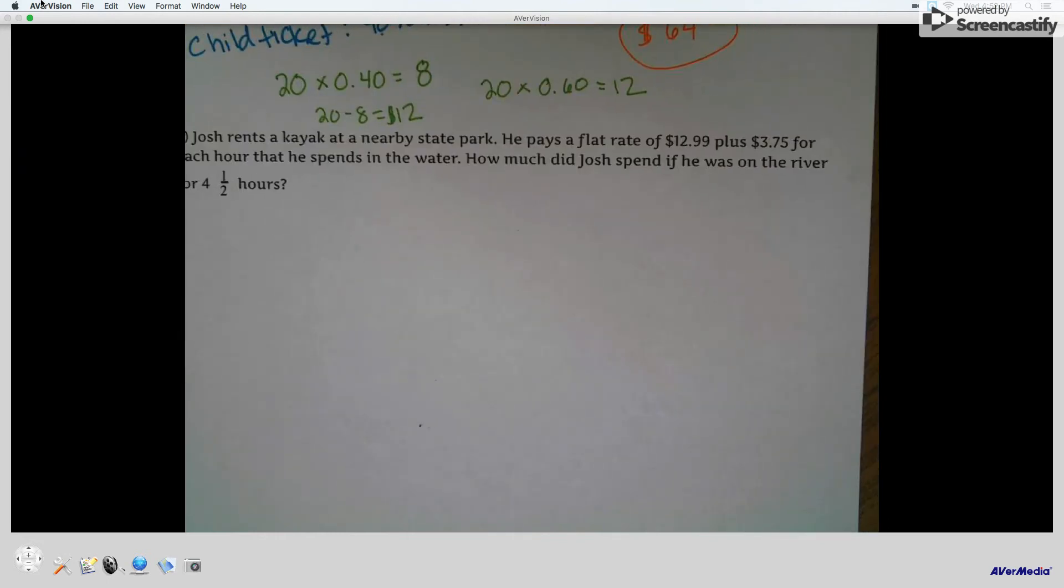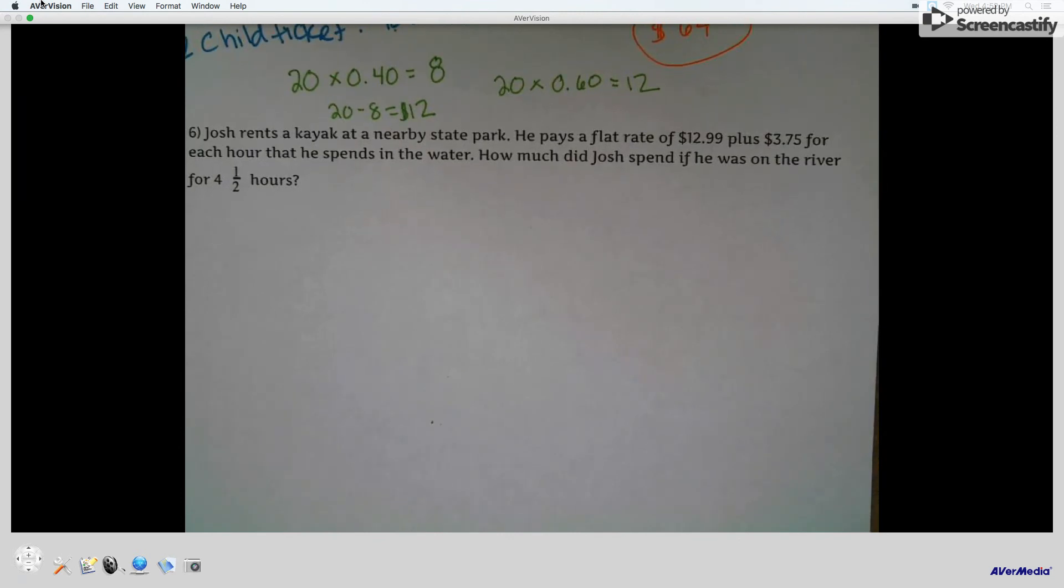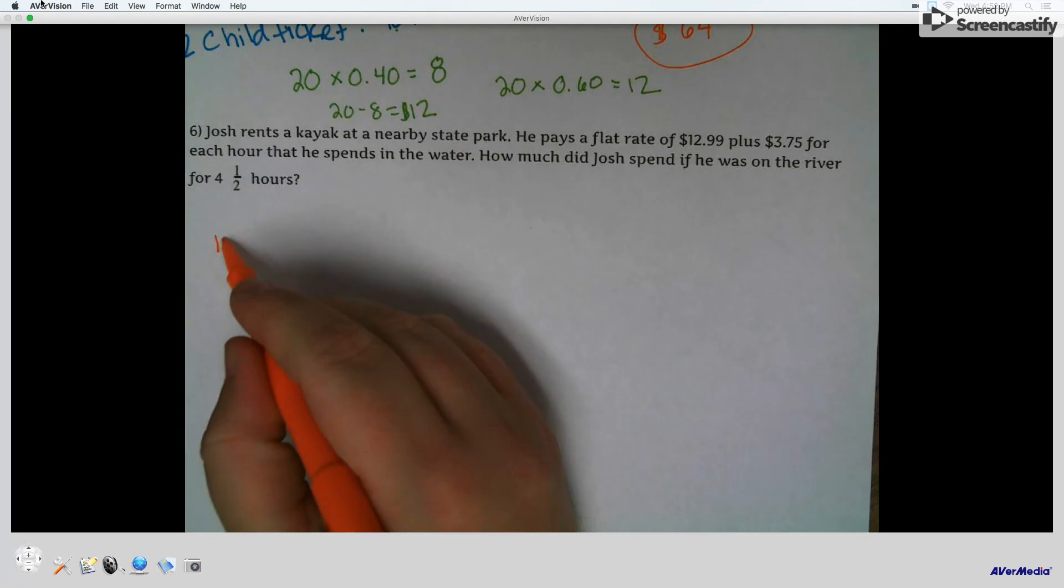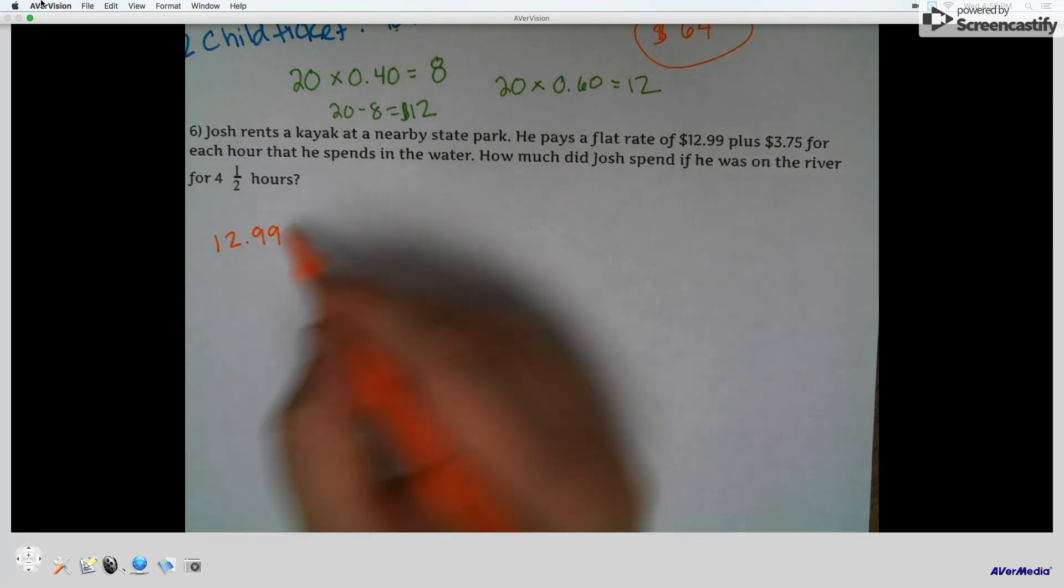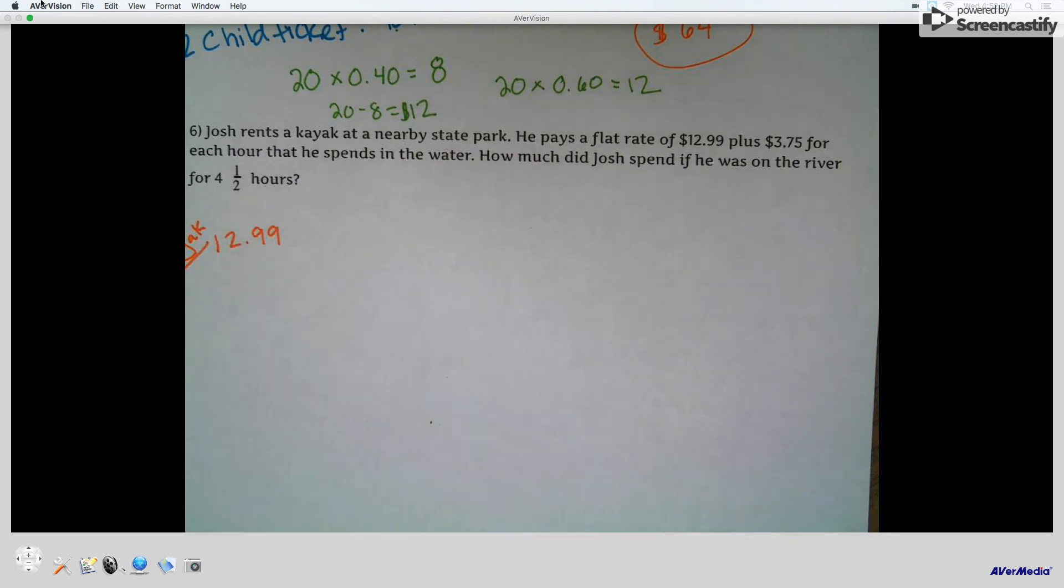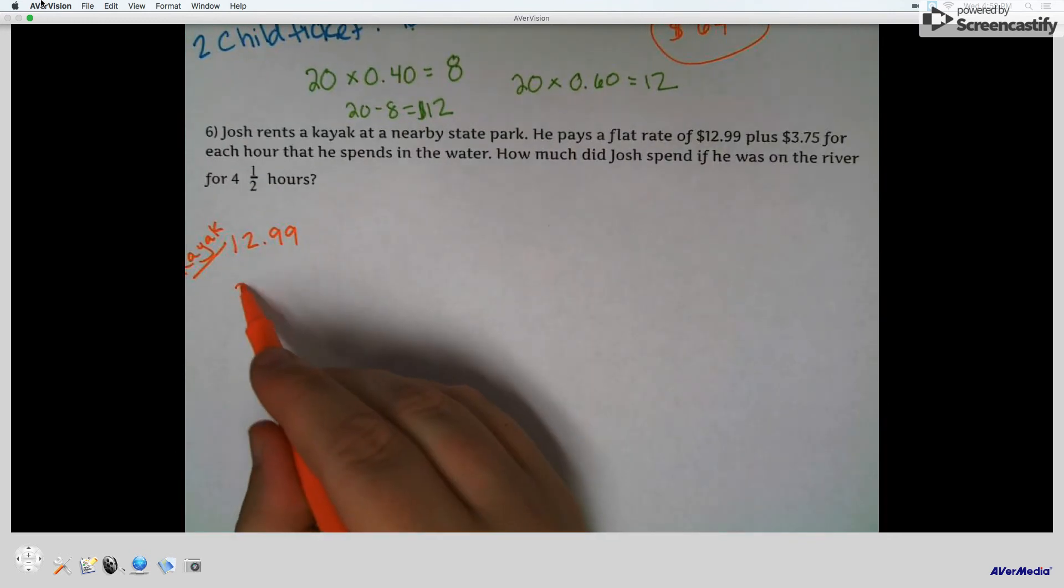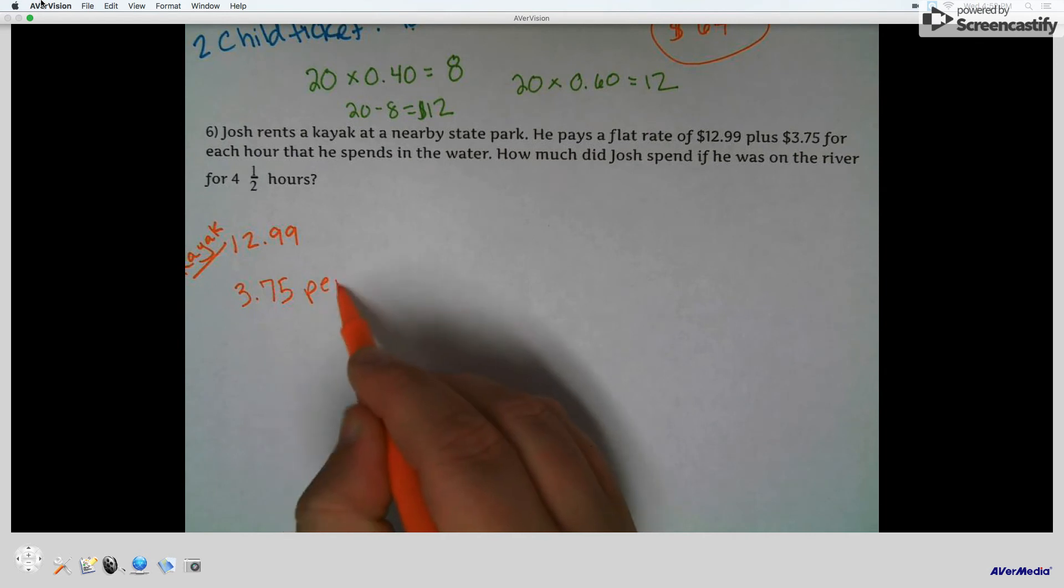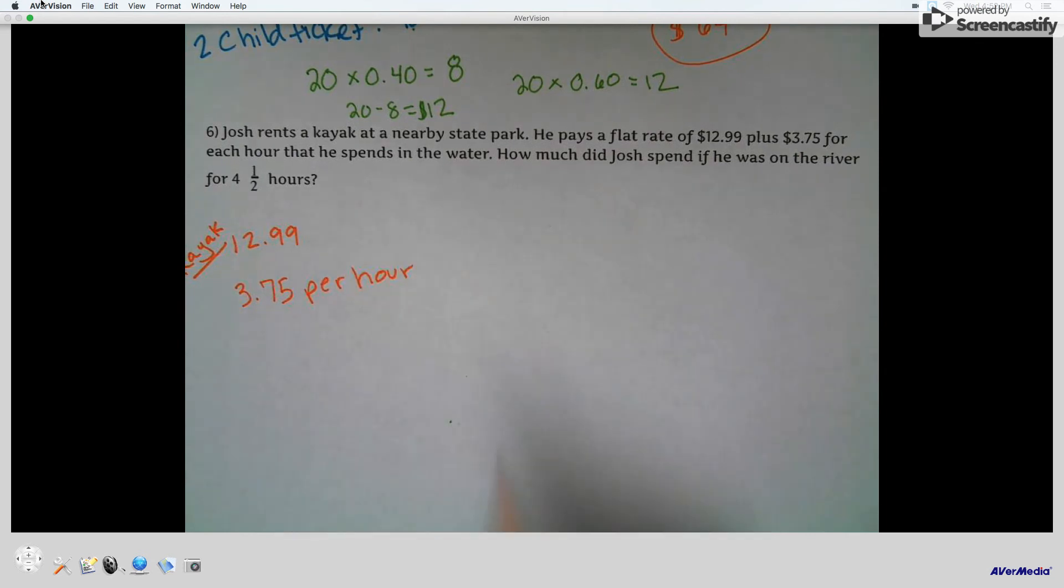Josh rents a kayak at a nearby state park. He pays a flat rate. He pays $12.99 for the kayak. So it's just for the kayak.